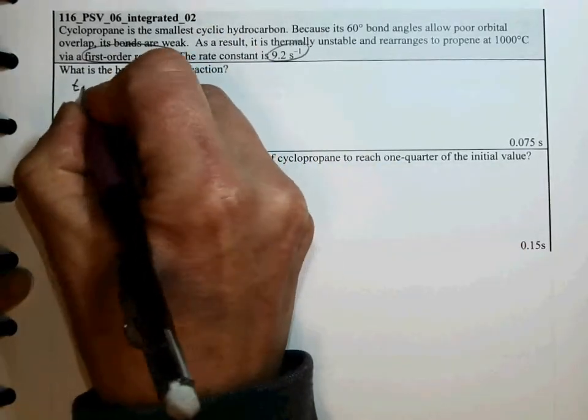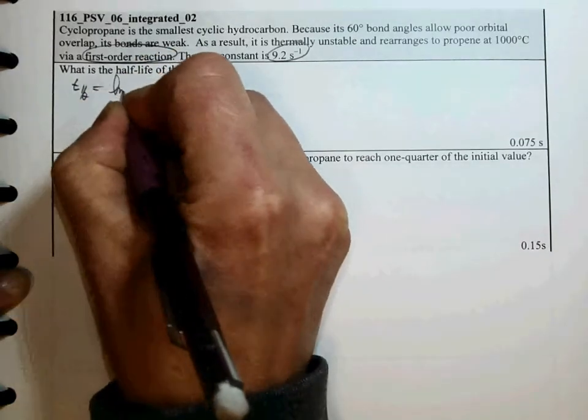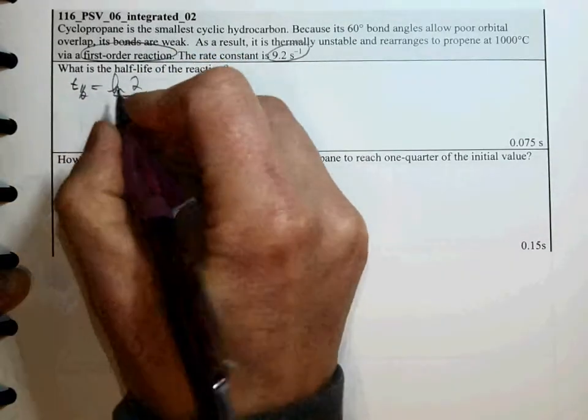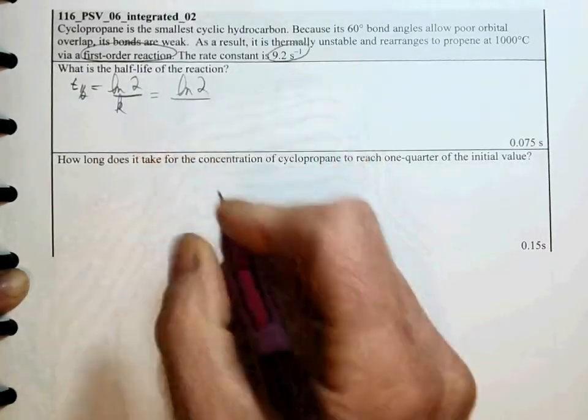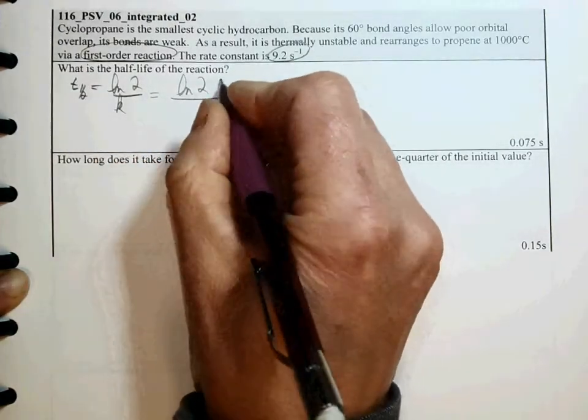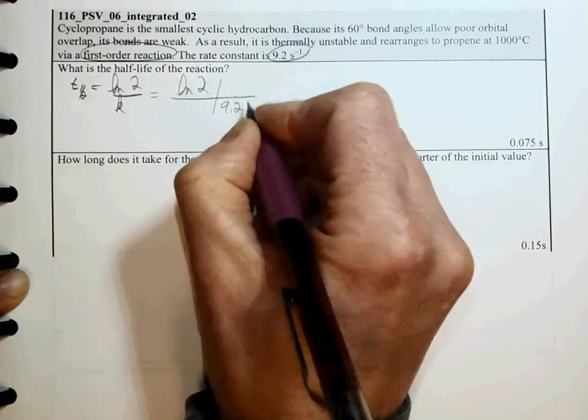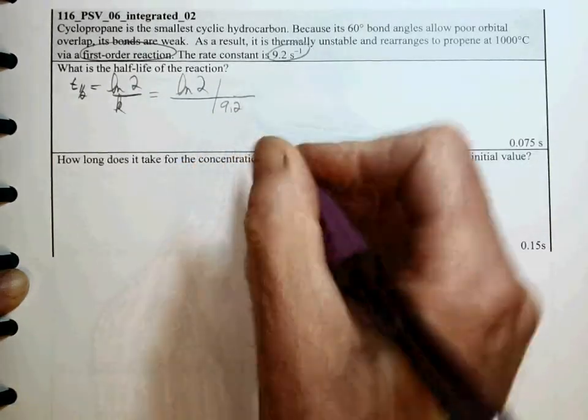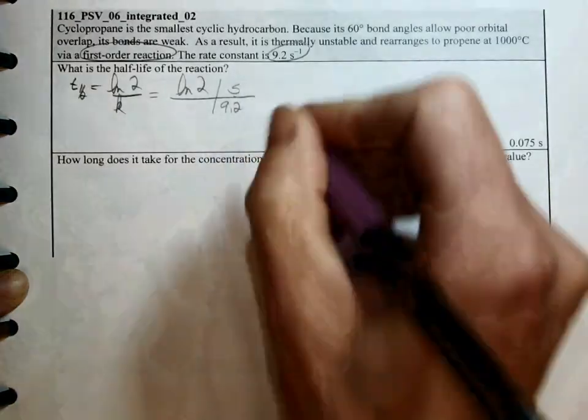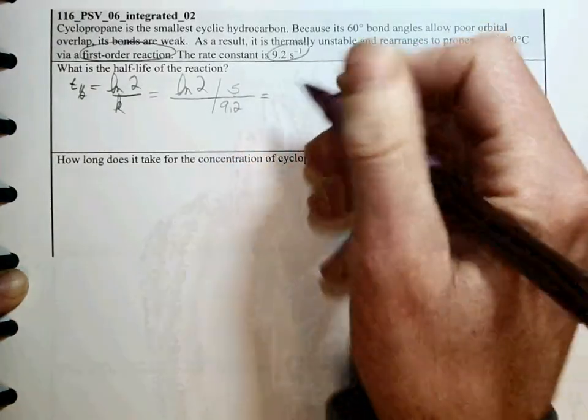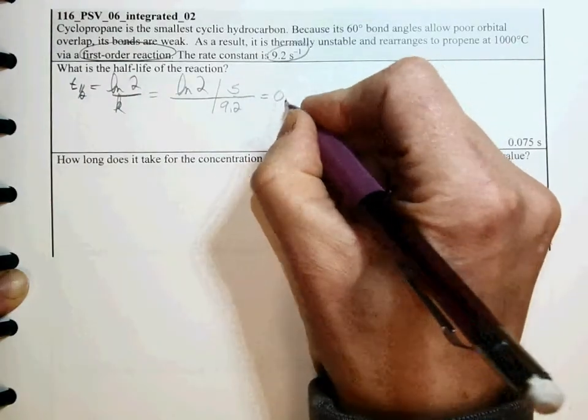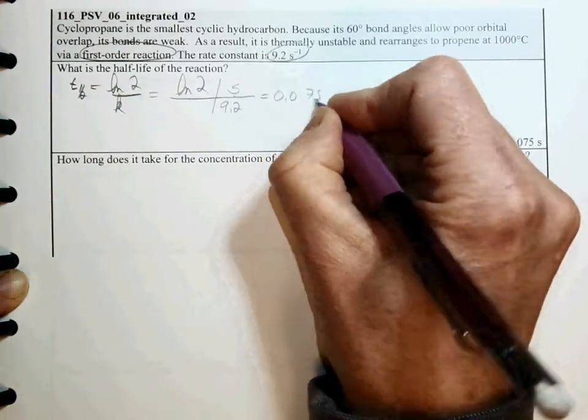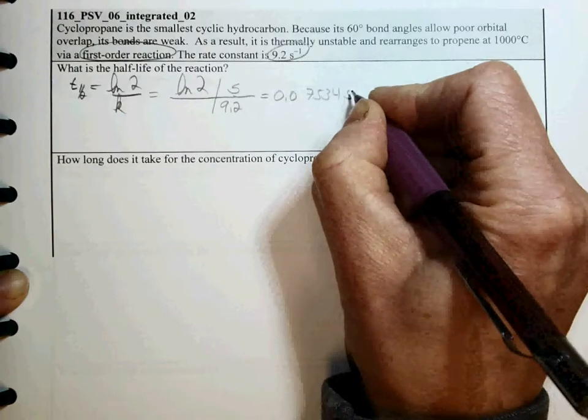our half-life is equal to ln of 2 divided by k. So it's ln of 2 divided by our given value of k, 9.2 reciprocal seconds. So that's 1 over 1 over seconds. Seconds comes up into the numerator, and our value would be 0.07534 seconds.